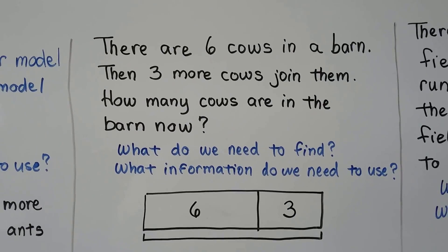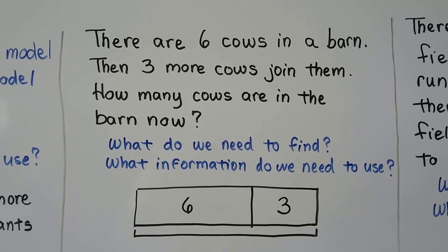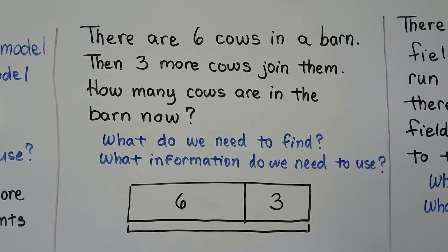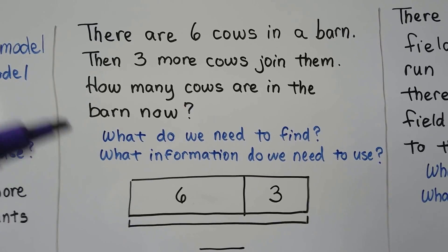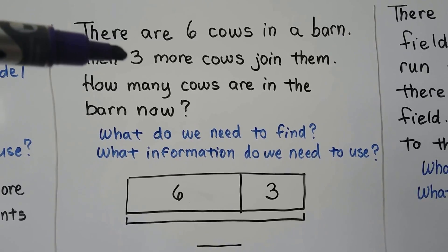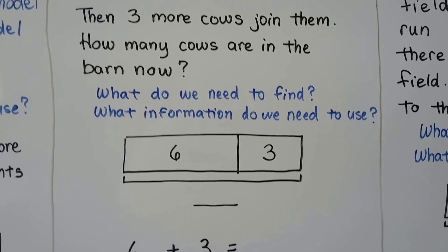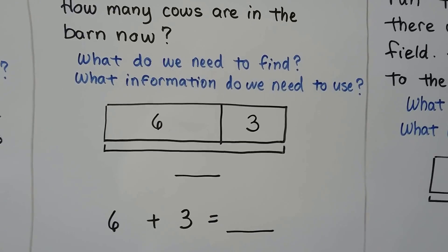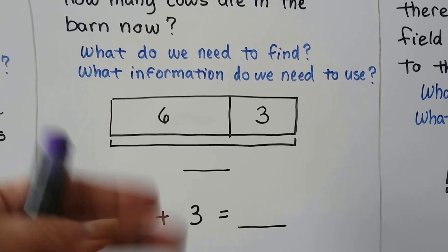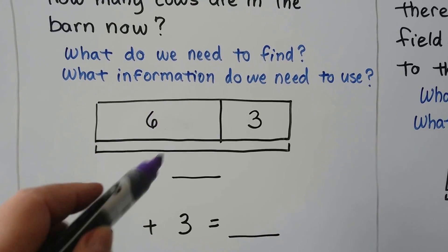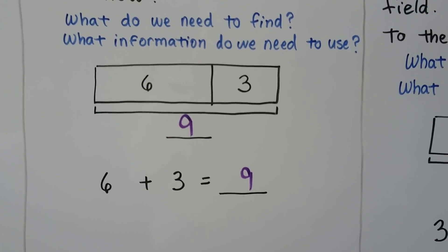There are six cows in a barn. Then three more cows join them. How many cows are in the barn now? We need to find how many cows are in the barn now. We need to know that there are six cows and then three more cows. That would be nine cows. Six plus three is equal to nine.